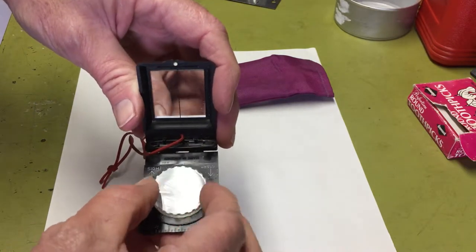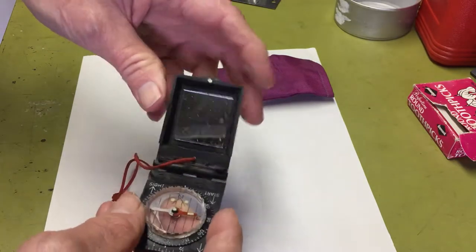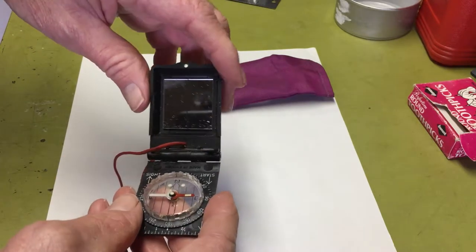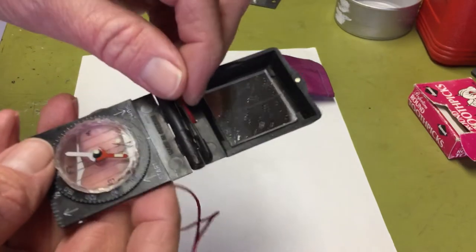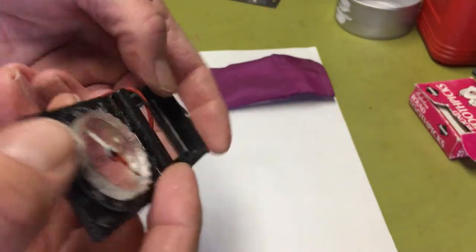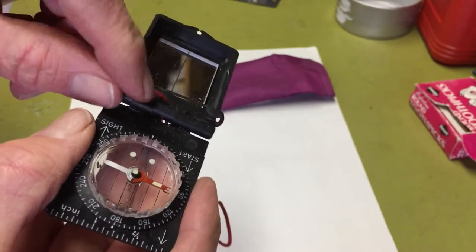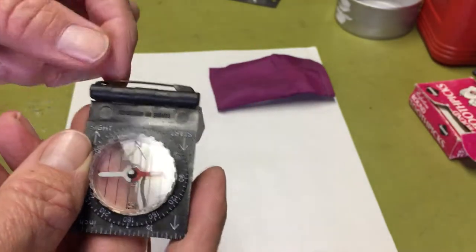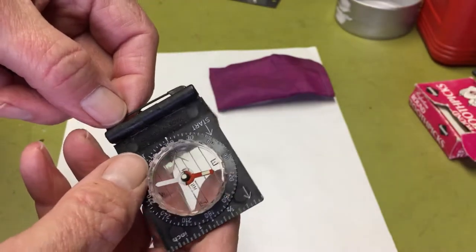It has a rotating bezel, but it also has a sighting mirror for sighting like a bigger compass, which is nice for signaling purposes. You can see that here—everything's black. Here's the pin that you can use to pin it to your coat or shirt.